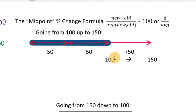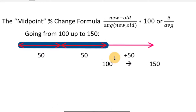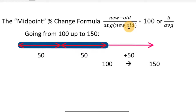The midpoint formula for a percent change looks the same on top — it's the change, new minus old — but instead of dividing by the original number, we divide by the average of the two values. It's the difference between the two numbers divided by the average of the two numbers, and then multiplied by 100 to make it a percent.